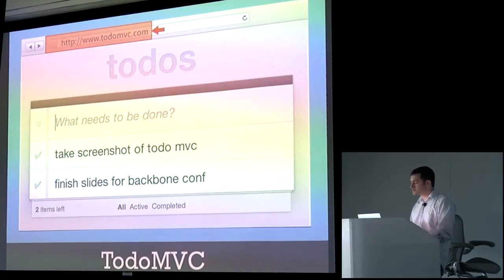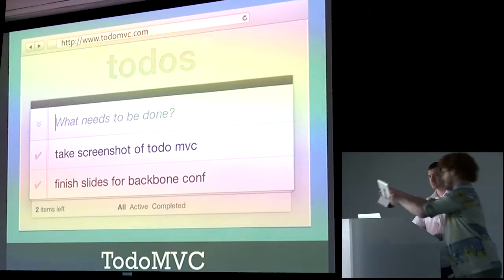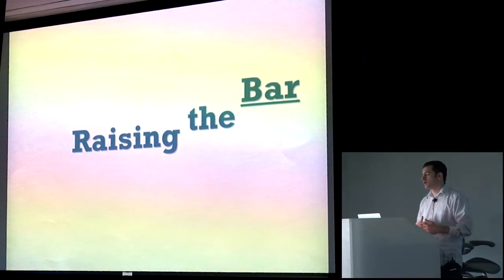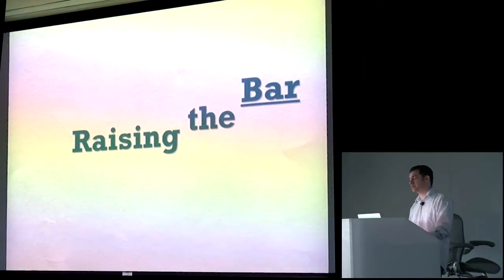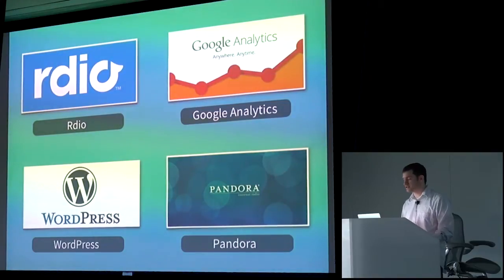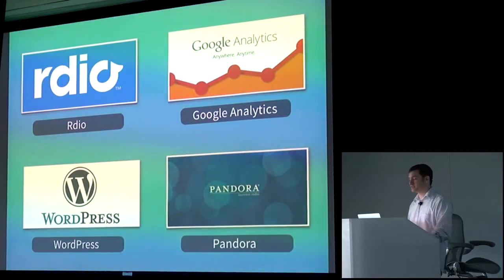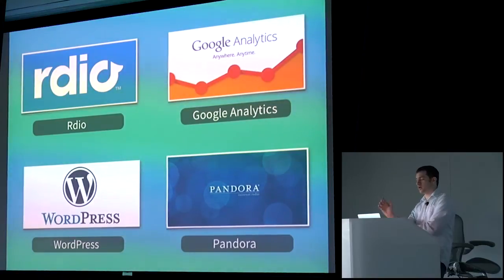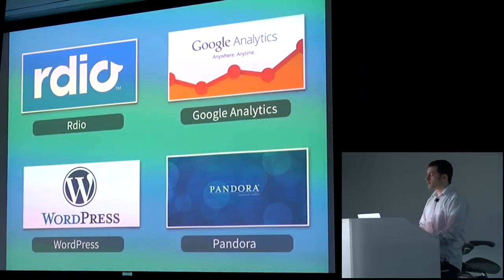So let's raise the bar way up. When I think of ambitious applications of sufficient size and scale, undoubtedly needing to follow solid design patterns, I think of applications like RDO, Google Analytics, WordPress, and Pandora. While Google Analytics is the only one not actually built with Backbone, I believe without a doubt it could be built with Backbone — it's probably the single greatest example of the power of a fully client-side application. For our demo app throughout this talk, we'll focus on RDO.